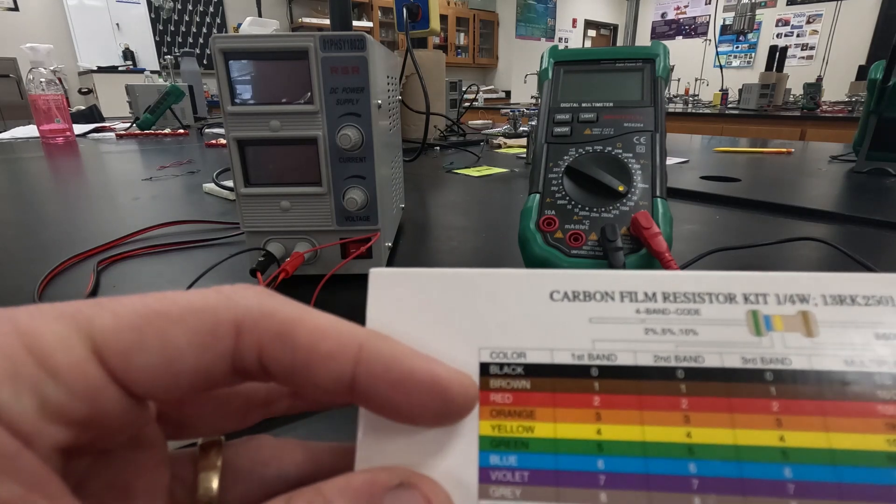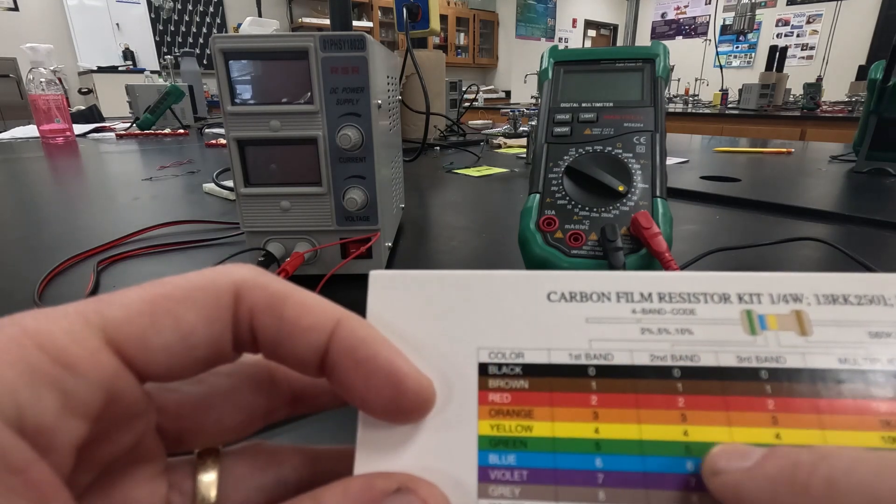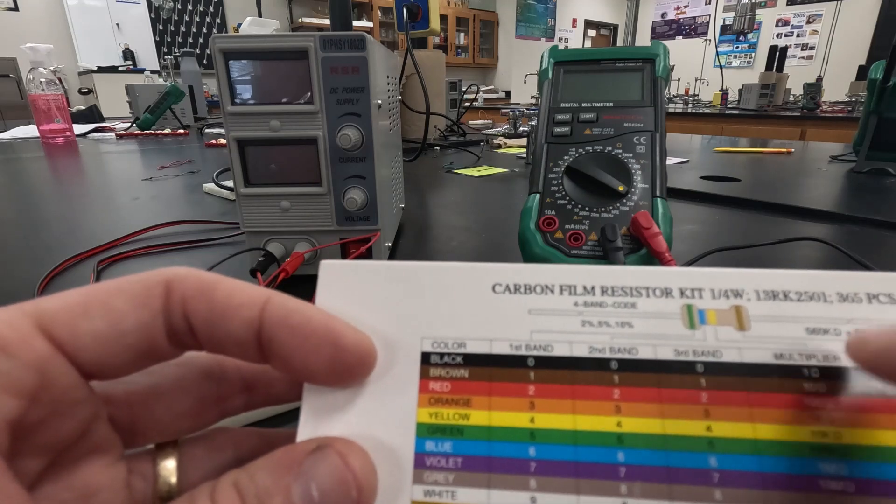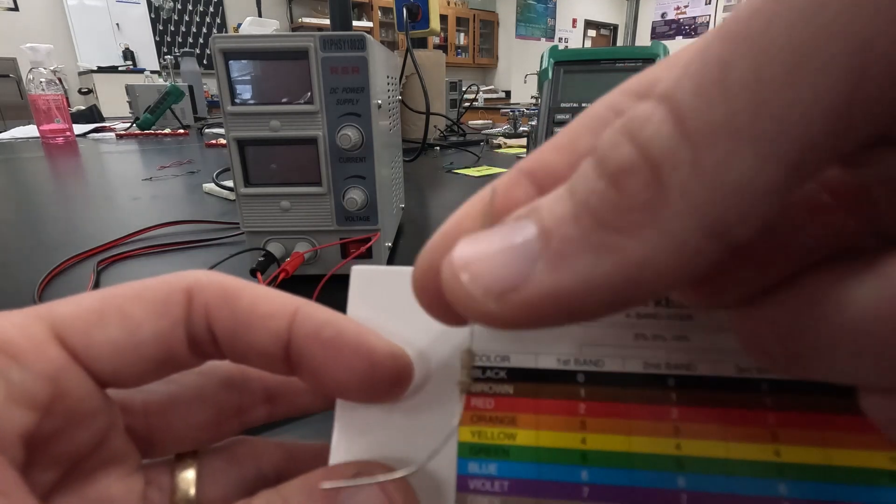Second we're going to use a 150 ohm which is going to be 1, 5. So brown, green, times 10 is brown. So brown, green, brown. We have that one here.